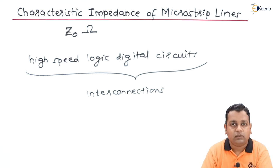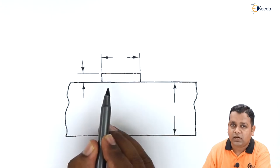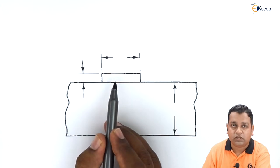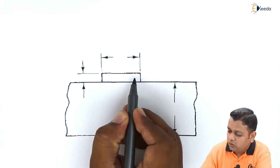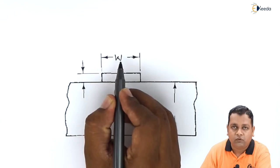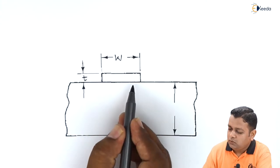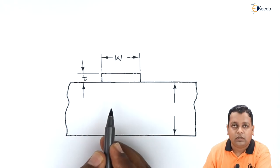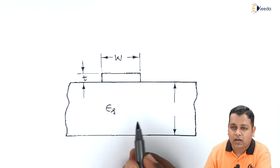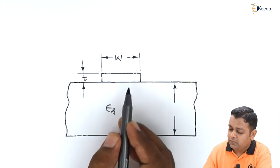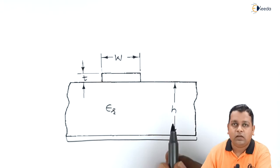We shall see a schematic diagram showing the cross-sectional view of the microstrip line. In this schematic, the strip conductor is at the top position, which used to be at the central position in strip lines. The width of the strip conductor is denoted by W, whereas the thickness of the strip conductor is denoted by small t. Below the strip conductor we have the dielectric material.